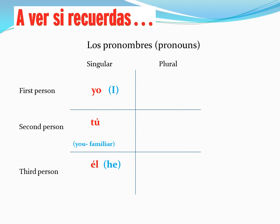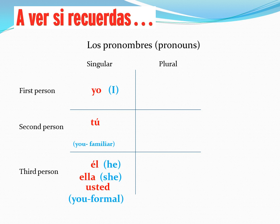Third person, we have él — he — notice the accent over the E. Ella, she. And then we have usted. Usted is 'you formal.' We use usted with someone that we respect, a stranger, someone we don't know. For example, with Dr. Anderson, we'll use usted. With a police officer, we'll use usted. And with our teacher, we can use usted.